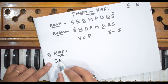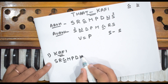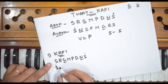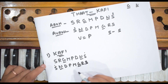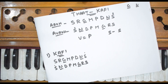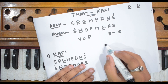The first and most important raag is Raag Kafi. Its aroha is: Sa, Shuddh Re, Komal Ga, Ma, Pa, Dha, Komal Ni, and Taar Saptak Sa. And the avaroha is: Sa, Komal Ni, Dha, Pa, Ma, Komal Ga, Re, Sa — the same as Thaat Kafi. You will find a lot of songs in this raag.